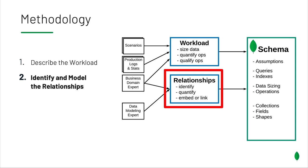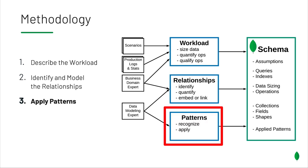Coming out of that phase, you're going to have a model with a number of collections — hopefully much fewer collections than you would have had tables or entities. But it still feels pretty much relational. This is where the third phase — applying patterns — comes into the picture. A pattern will be a transformation that helps you improve performance or make your data easier to access. What we need to do there is to recognize the situation in which we should apply a pattern and then apply it.